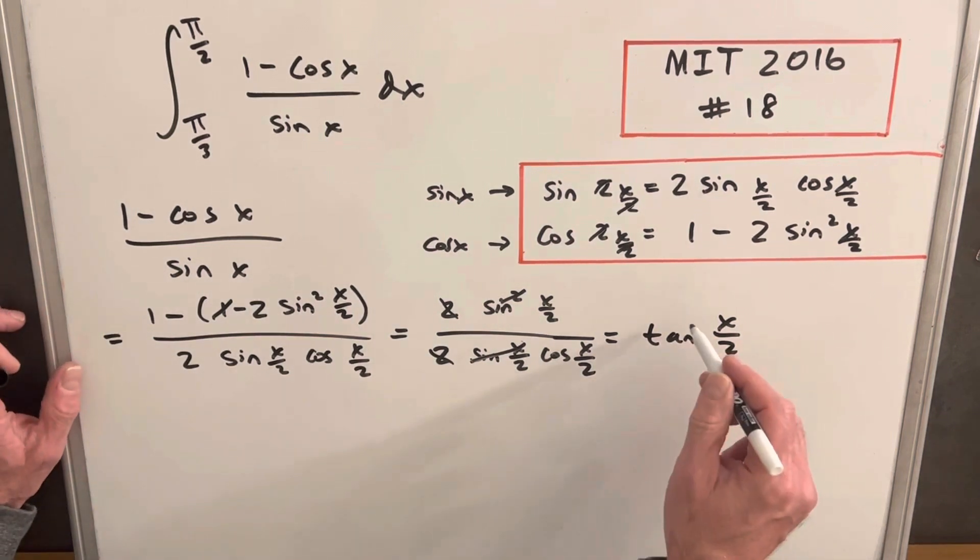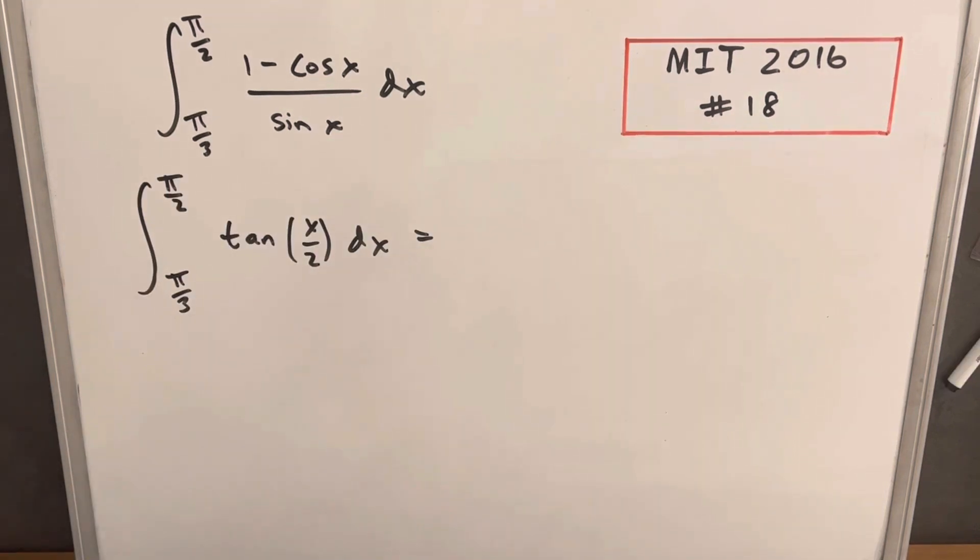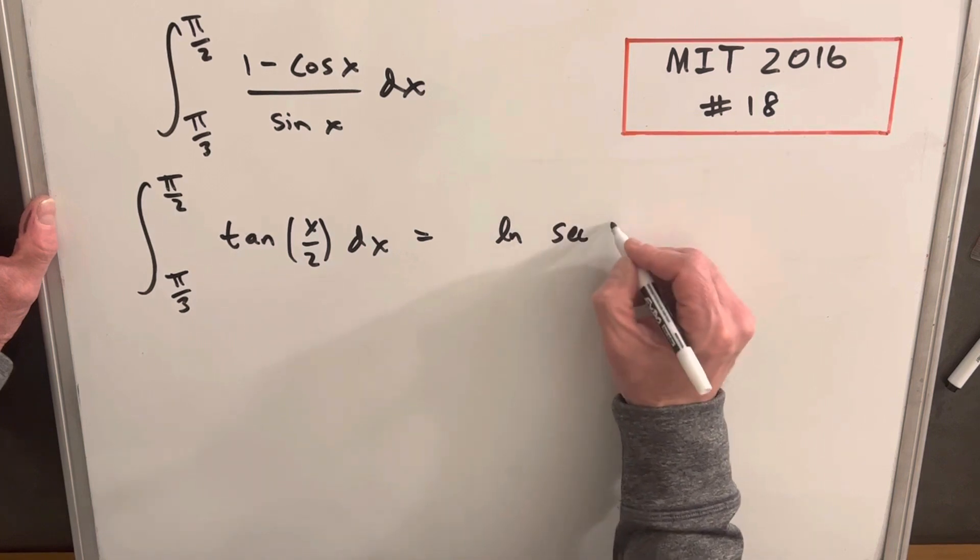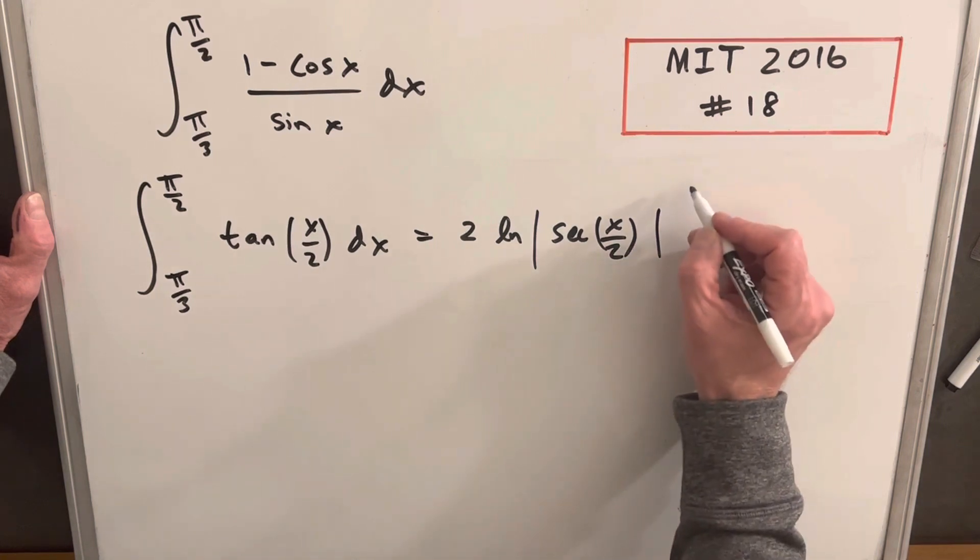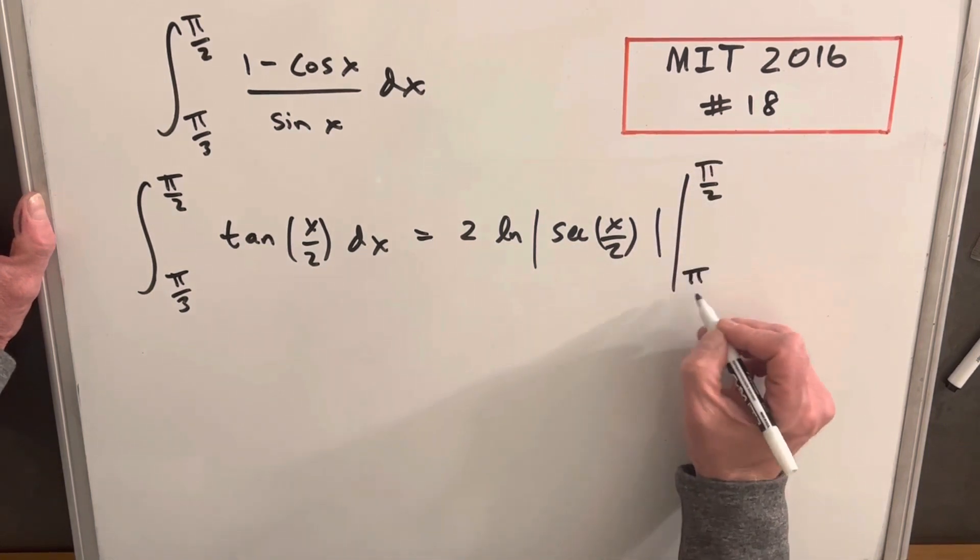So what I'm going to do is take this, and I'm just going to replace my integral with tan x over 2. And we know how to integrate this thing. It's just going to be natural log of secant x over 2. If we put 1 half in the denominator, we get a 2 out front here, and then we just need to evaluate this from pi over 2 to pi over 3.